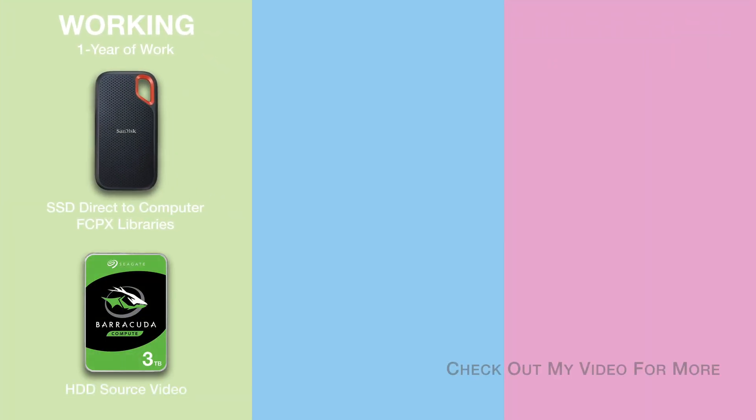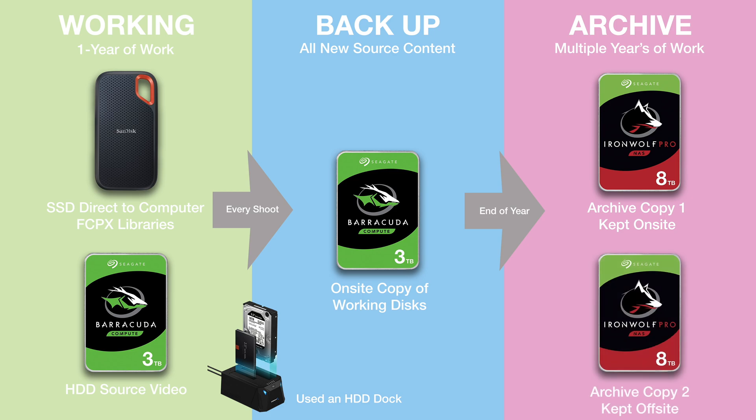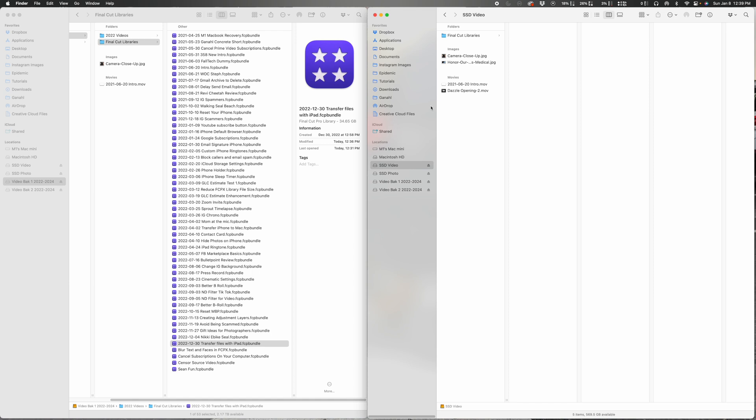As a photographer and videographer, every year I go through all of my source files and libraries and archive everything. A lot of times the hard drives or solid state drives I use become available after archiving, and if I format those I can reuse them the following year. So let me show you how I got APFS to show up as one of the format options.